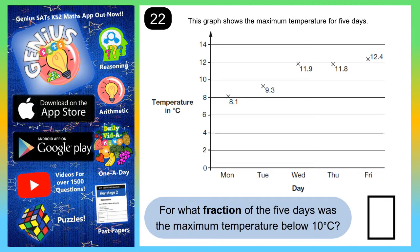Welcome SatsGeniuses to question 22. This graph shows the maximum temperature for five days, Monday through to Friday. What fraction of the five days was the maximum temperature below 10 degrees?